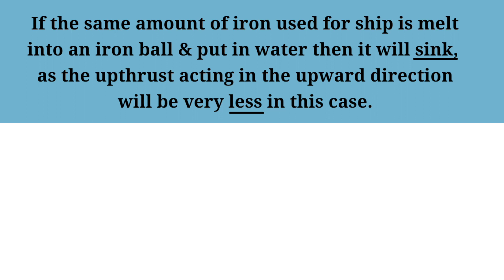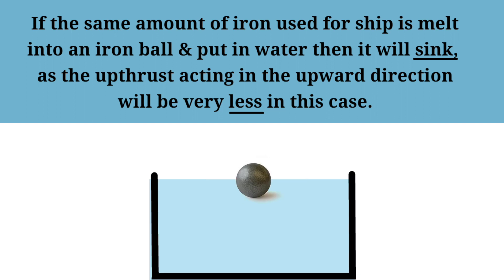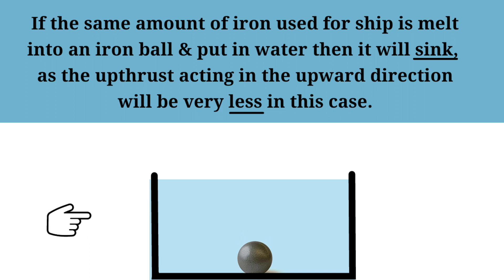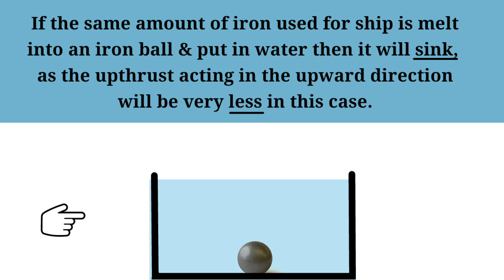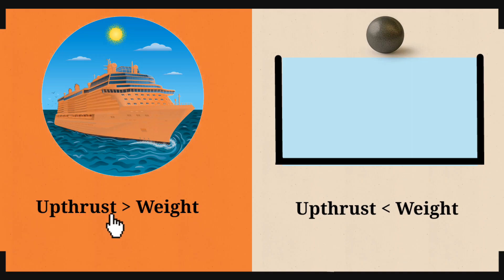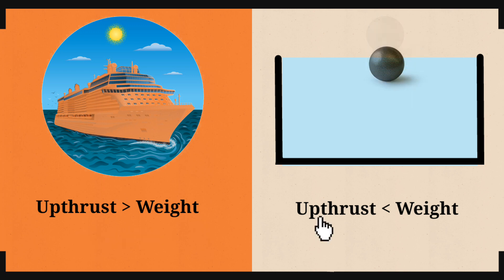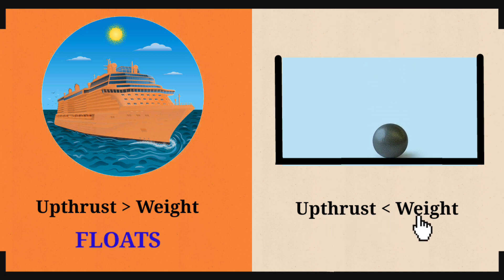If the same amount of iron used for the ship is melted into an iron ball and put in water, then it will sink, as the upthrust acting in the upward direction will be very less in this case. Upthrust greater than weight — object will float. Upthrust less than weight — object sinks.